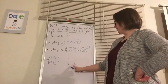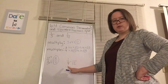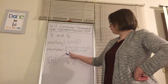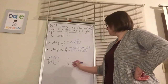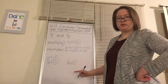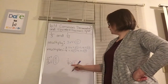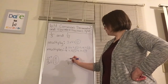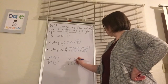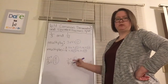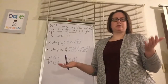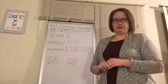Then I'm going to do the same thing for 1/4. Whatever I do to my denominator, I have to do to my numerator. We did 4 times 3 to get 12. So 1 times 3 equals 3. So I get 4/12 and 3/12 as my equivalent fractions. Now I would be ready to add or subtract depending on what the problem was asking for.